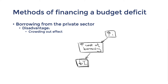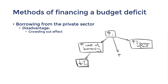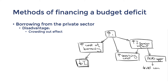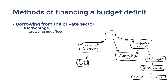You may also remember from the balance of payments topic that increased interest rates will also attract greater capital inflow and increased debt servicing costs flowing overseas. The currency appreciation from the capital inflow could also decrease international competitiveness and worsen the current account deficit. This is how the crowding out effect can also impact external stability.